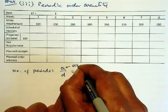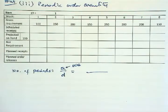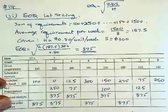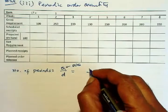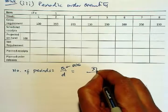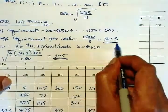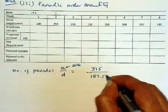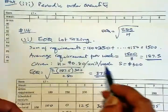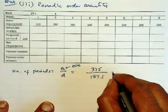So the EOQ from the previous problem, we found EOQ to be 375. So we take 375 and divide by demand rate. And again, we found the demand rate to be 187.5 from the previous section. So that would give us two weeks, approximately, rounded up.